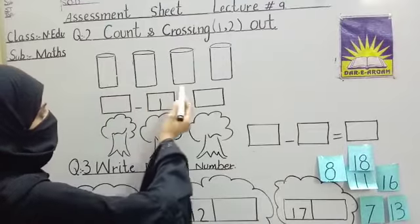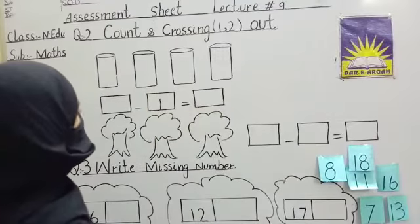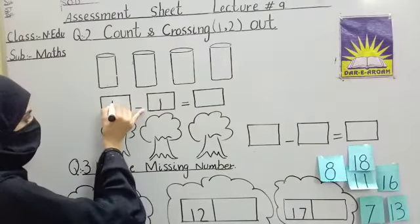One, two, three, four. How many glass are there? Four. Right here. Four.